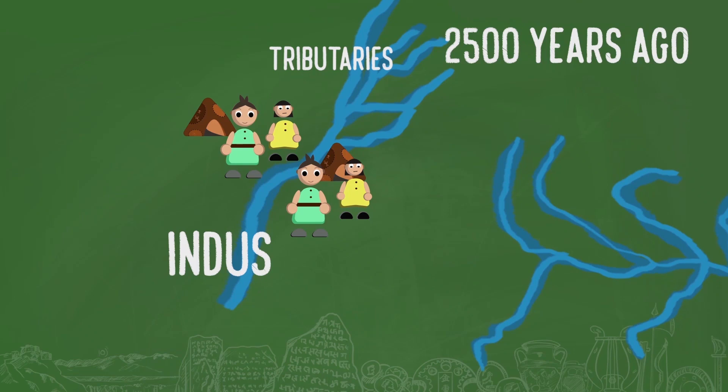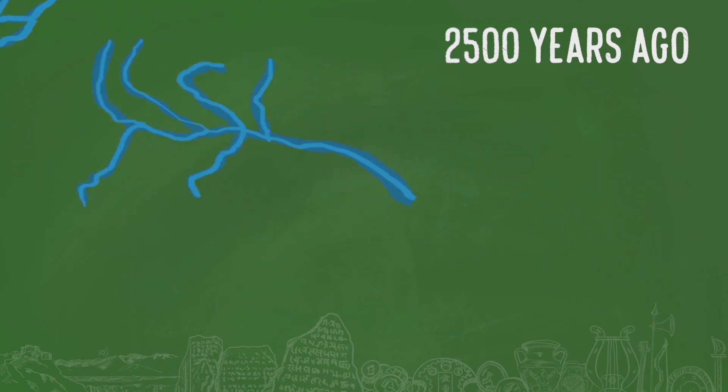Later, about 2500 years ago, cities developed on the banks of Ganga and its tributaries and also along the seacoast.